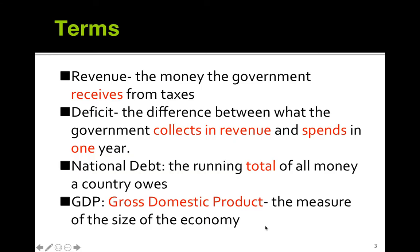Terms to keep in mind: revenue, deficit, national debt, and GDP — gross domestic product. Revenue is the money the government receives from taxes. Whenever the government, the IRS, collects taxes, the revenue is the money that they receive. As the IRS says, in order to provide for a polite society, taxes must be created.